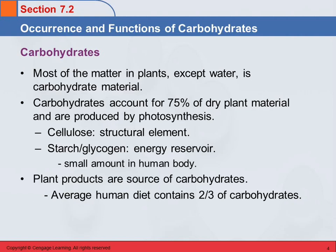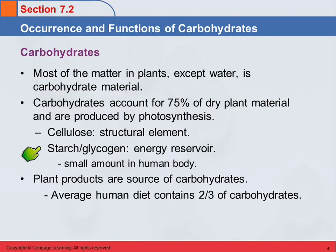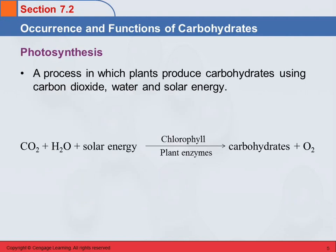Carbohydrates are produced by photosynthesis, and there are two main types. Cellulose, which is a structural element and gives a plant its structure — plants don't have bones like mammals do, so how does a tree stand up? It's the cellulose in it. And then they also have another type of carbohydrate called starch or glycogen, which is an energy reserve. Plant products are the primary source of carbohydrates, and the average human diet is two-thirds carbohydrates.